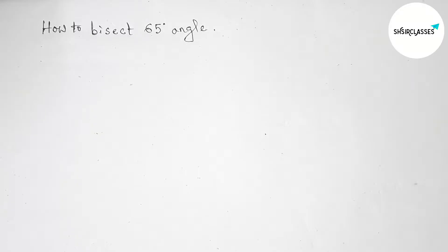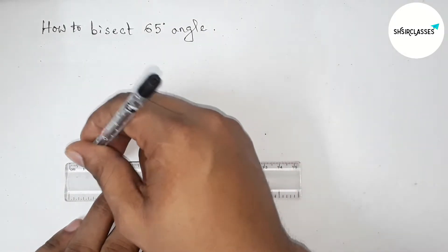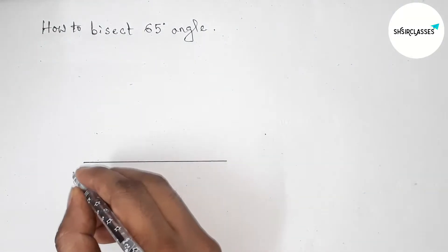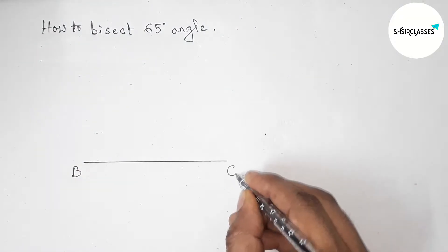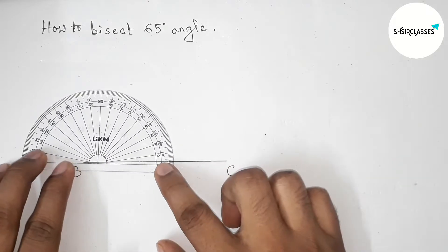First of all, let's draw a line segment of any length, marking point B and point C. Now we'll draw a 65-degree angle on point B with the help of a protractor.